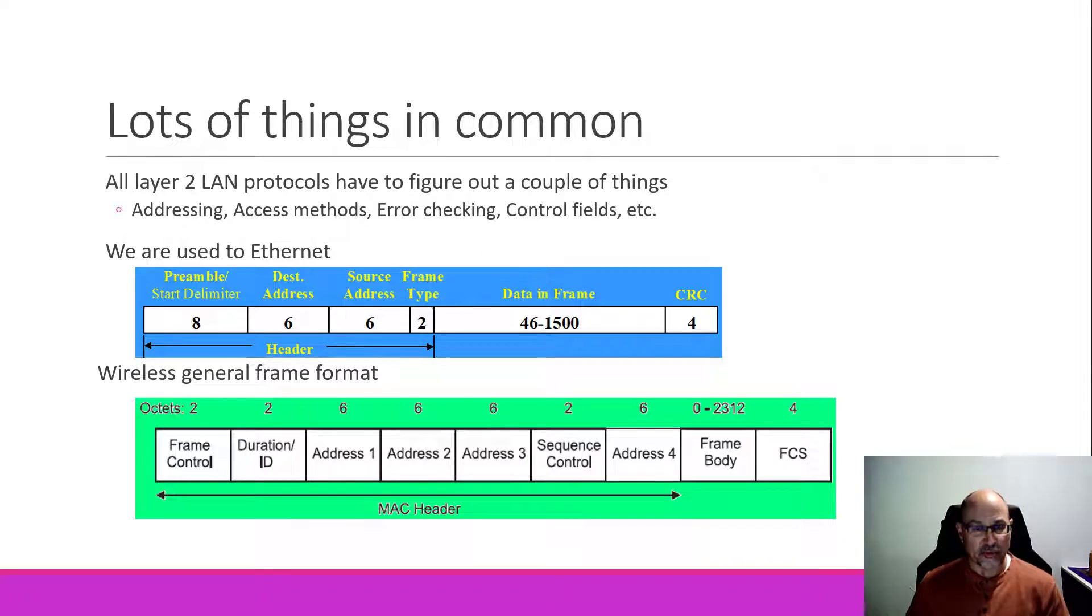The wireless general frame format, all the way at the bottom here, we can see is a little bit different. We're going to go through all of this, but we've got some of the same elements. We've got control fields, we've got addresses to use, but then we've got a couple of other things that are not so familiar, and then we finally wind up with a frame check sequence or a CRC32 again.